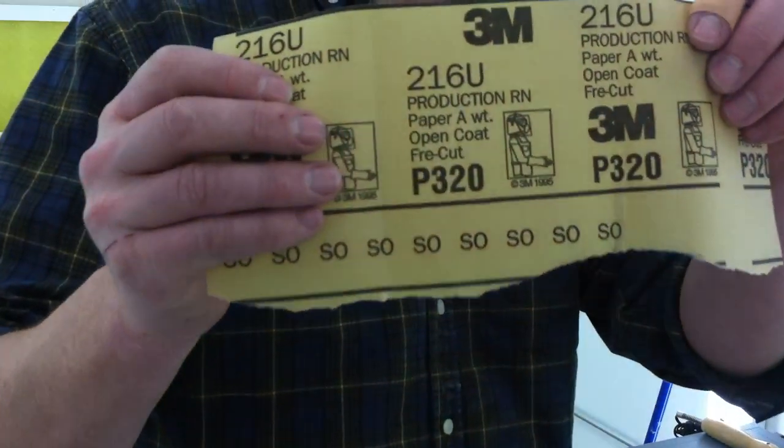If you were to wet sand this, everywhere there was a run from the water, it would leave a hard edge that you would not be able to hide. You would have to actually go through and spray another coat and dry sand it. We use 320 open coat sandpaper.